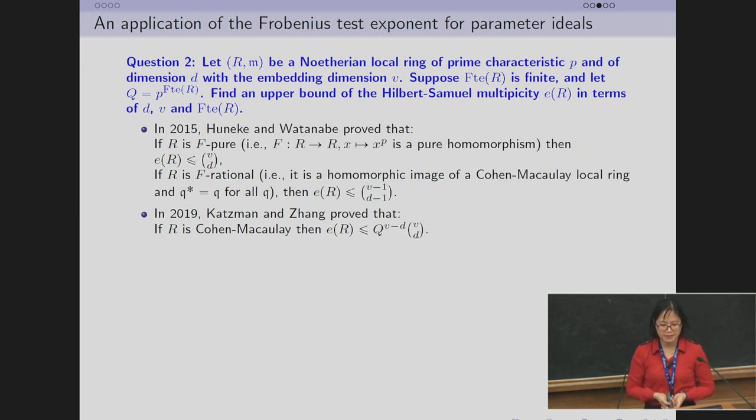In 2015, Huneke and Watanabe gave an upper bound for multiplicity when the ring is F-pure, and a better bound when the ring is F-rational. As you can see from the slide, the bound depends on dimension d and embedding dimension v.